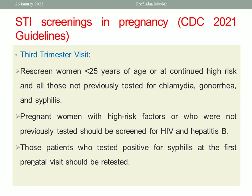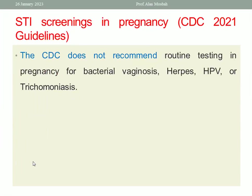The CDC does not recommend routine testing in pregnancy for bacterial vaginosis, herpes, human papilloma virus, or trichomoniasis. So please remember — don't burden the patient and the hospital with unnecessary tests. There is no recommendation for screening or testing for bacterial vaginosis, herpes, HPV, or trichomoniasis in routine pregnancy care.